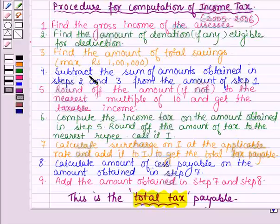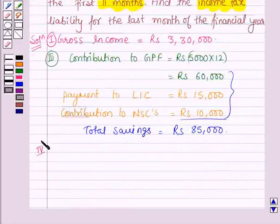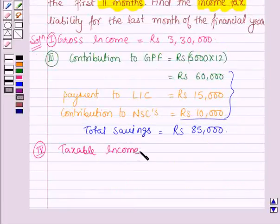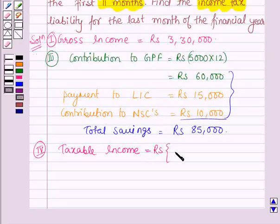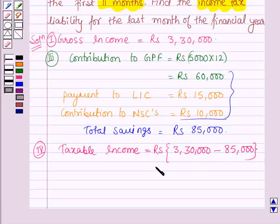In the fourth step, we have to subtract the sum of amounts obtained in steps 2 and 3 from the amount of step 1 to find the taxable income. Since the second step, that is the amount of donation, is nil, we subtract rupees 85,000 from rupees 3,30,000. Therefore, the taxable income is equal to rupees 3,30,000 minus 85,000, which is equal to rupees 2,45,000.